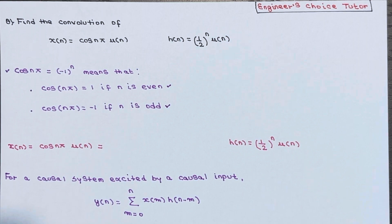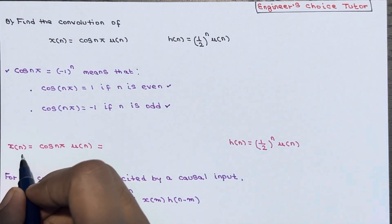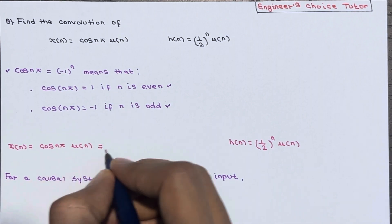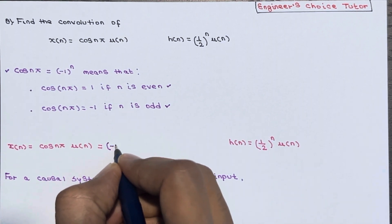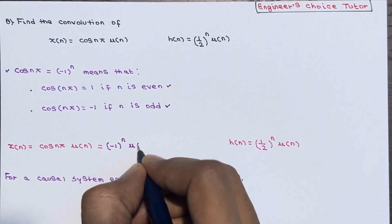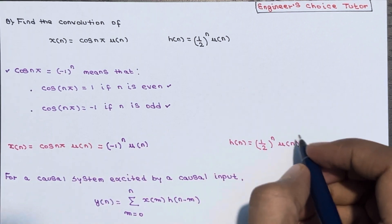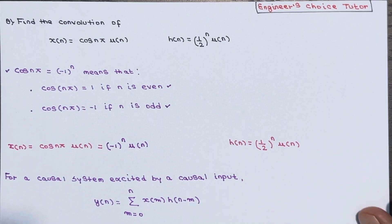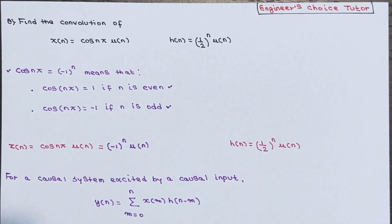Our agenda is to calculate the convolution sum. From here, x(n) equals cos(nπ) · u(n), and since cos(nπ) = (-1)^n, this becomes (-1)^n · u(n). And h(n) is (1/2)^n · u(n).